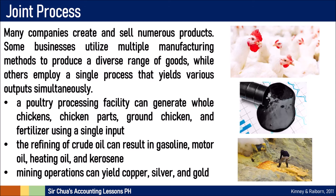We have three examples of Joint Processes. Number one, a poultry processing facility can generate whole chicken, or chicken parts, or ground chicken, and even fertilizer — all coming from a single main input. Another example: the refining of crude oil that can result in gasoline, motor oil, heating oil, and kerosene. And mining operations can give us copper, silver, gold, and so on. So in Joint Processes, we start with one single input and one single process, but it gives us many results — numerous products with different yields coming from a single process.